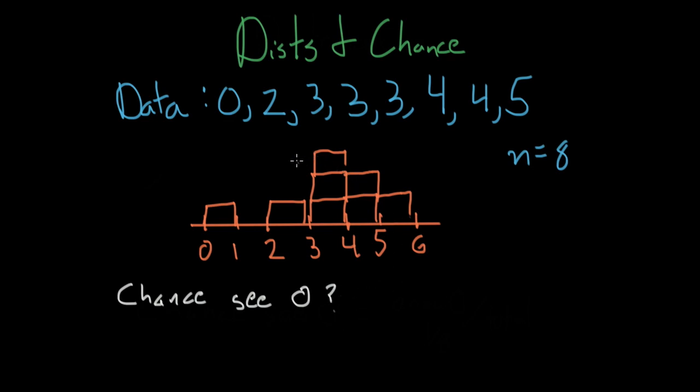So one way that you could do it is if you had the complete original data set, you could go ahead and count the number of times zero occurs and divide by the total number of times.